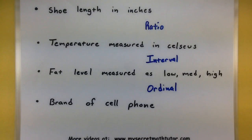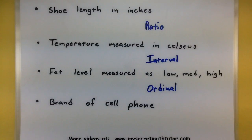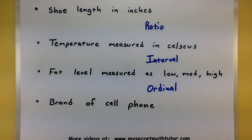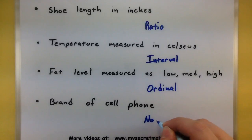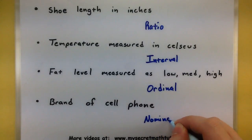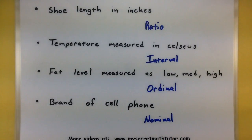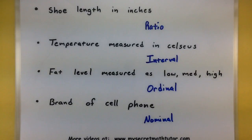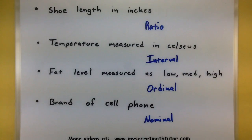I'm trying to figure out what brand of cell phone people have. Does the order matter? As soon as we ask that question, the answer is no — it doesn't matter how I order all these different brands. It doesn't even make sense to put them into an order. So this is nominal data. You can see that these levels of measurement really help us classify the type of data we are collecting. If you ask those three simple questions, you can easily drop it into one of these categories. If you'd like to see more videos, please visit MySecretMathTutor.com.